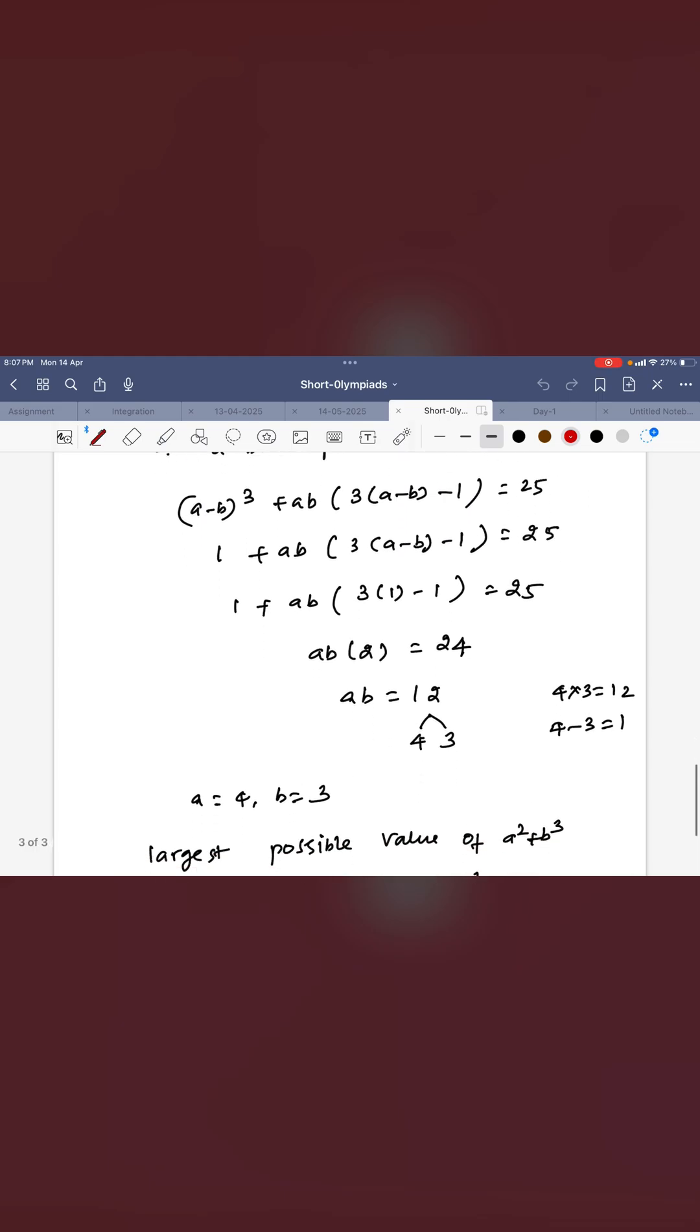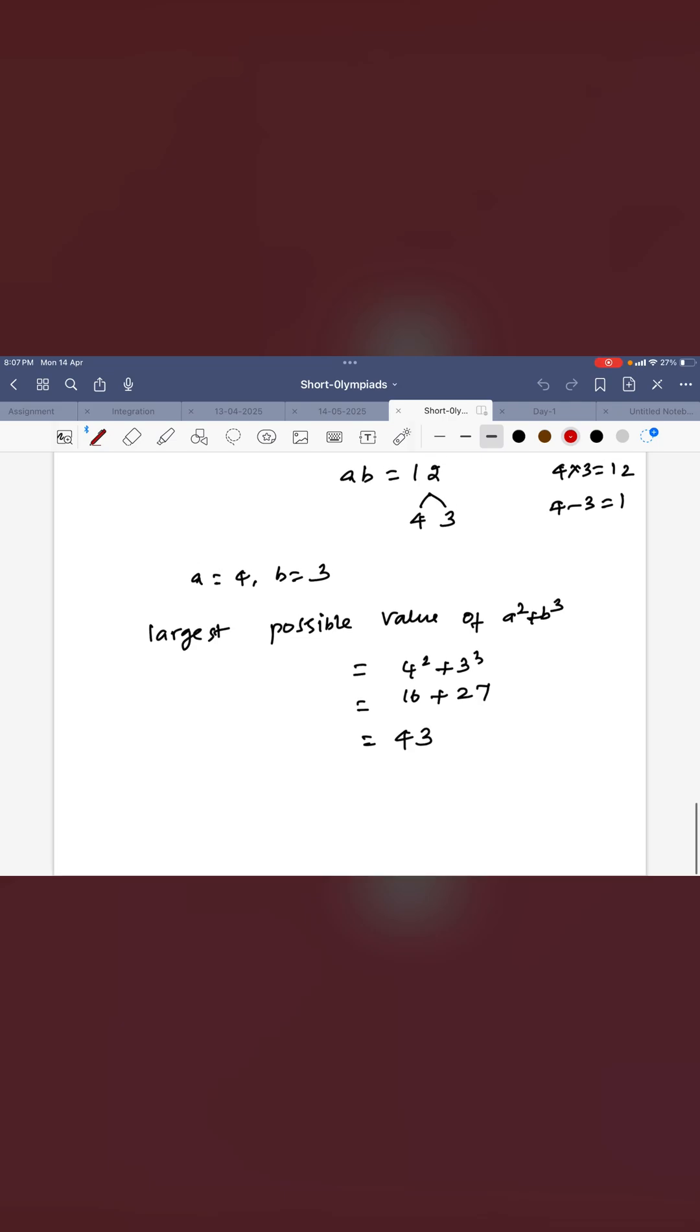The difference is 1 as required. Then 4 and 3 are the only possibilities. Therefore, the largest possible value is 4² + 3² = 25, which is your answer.